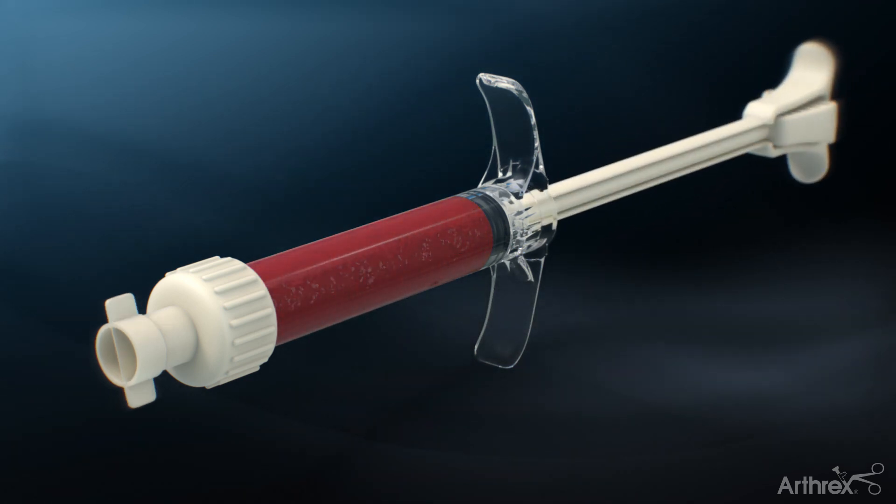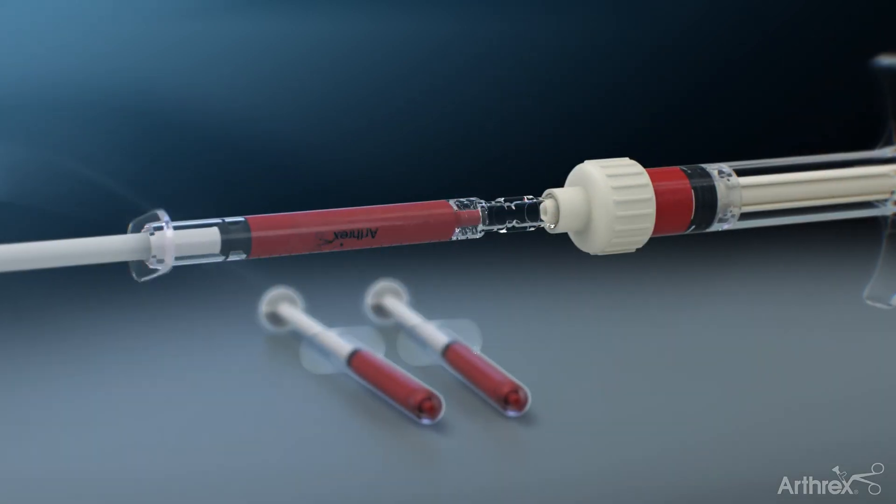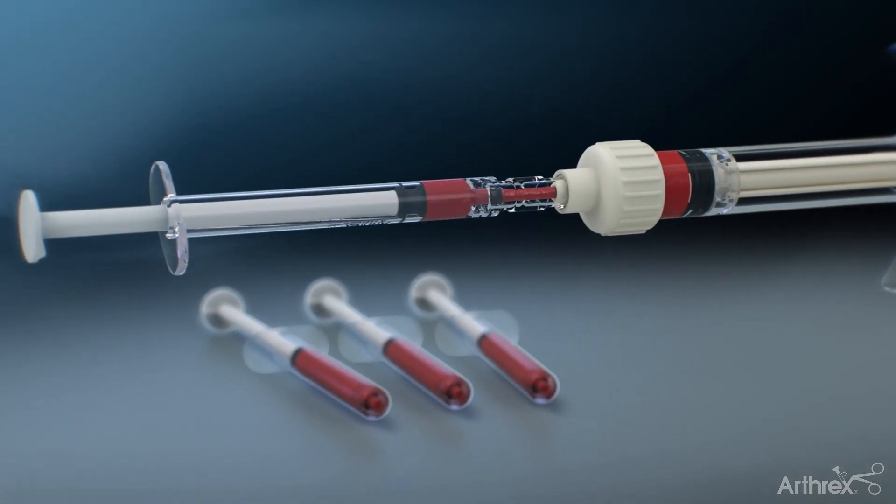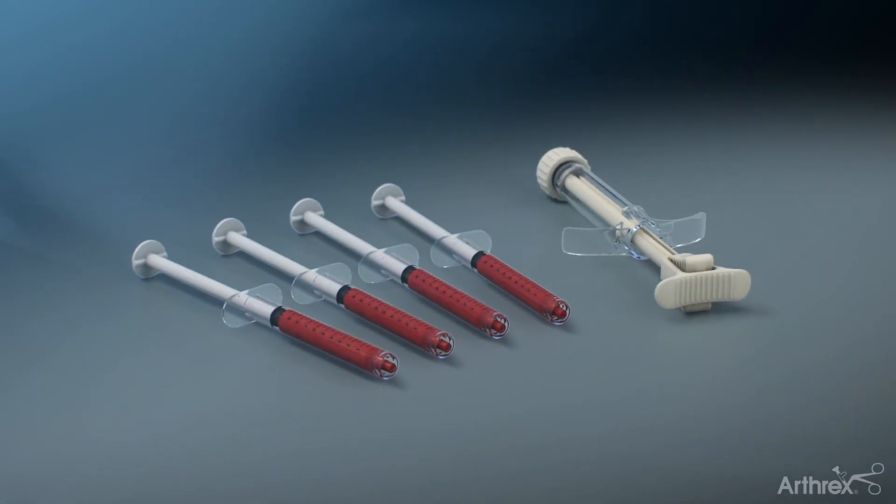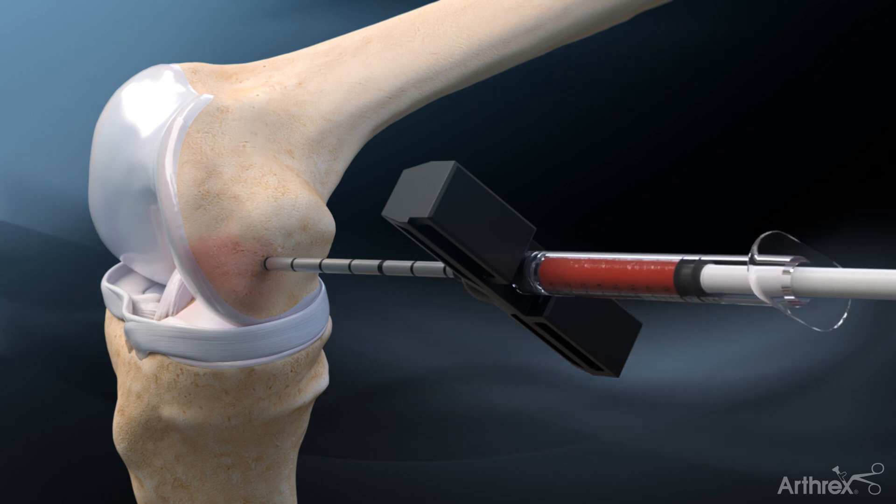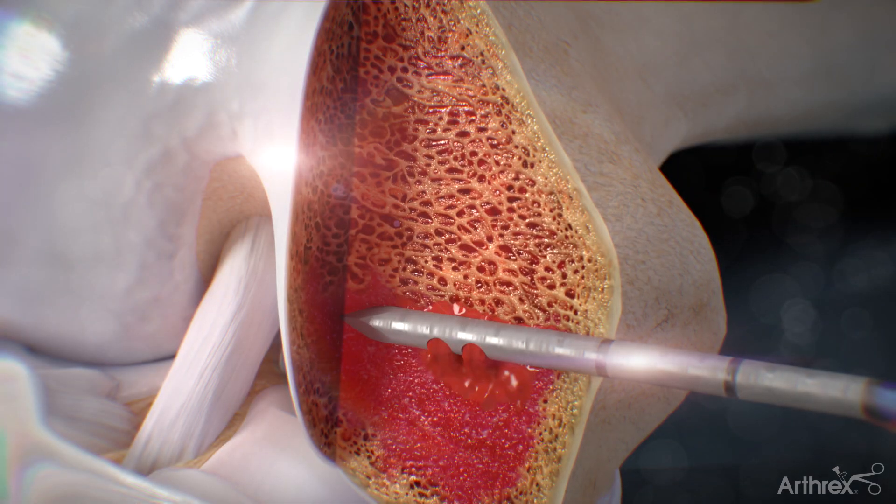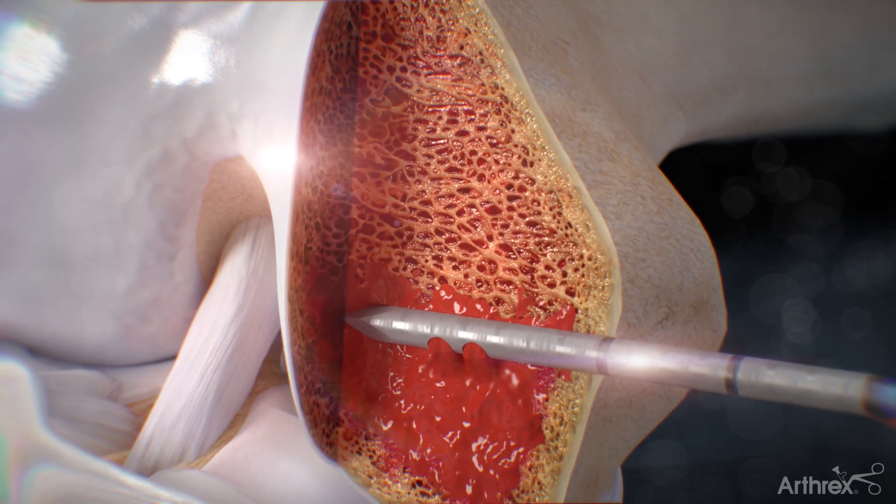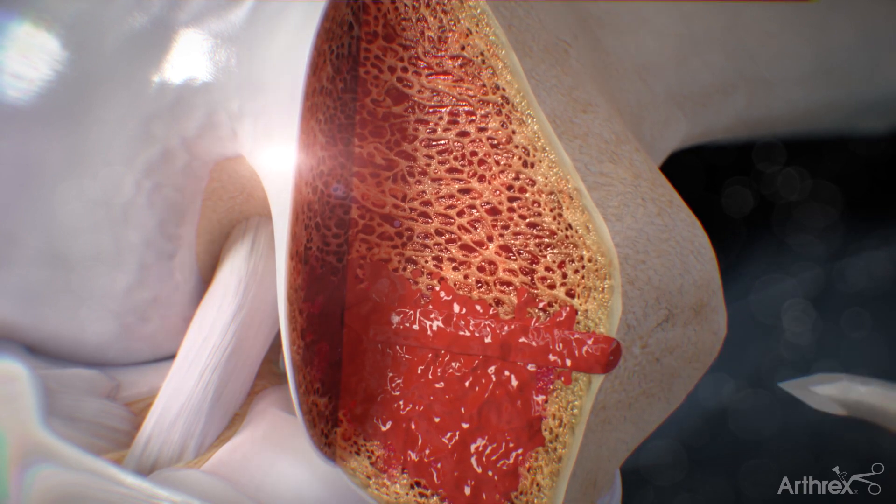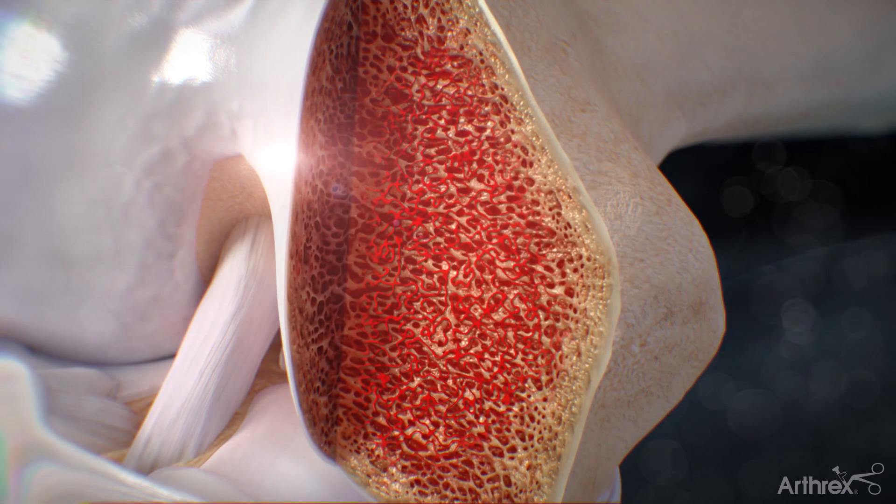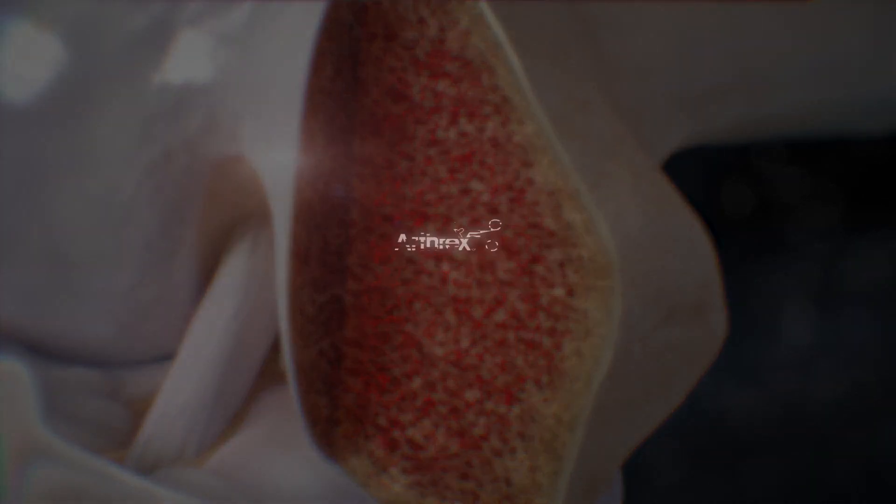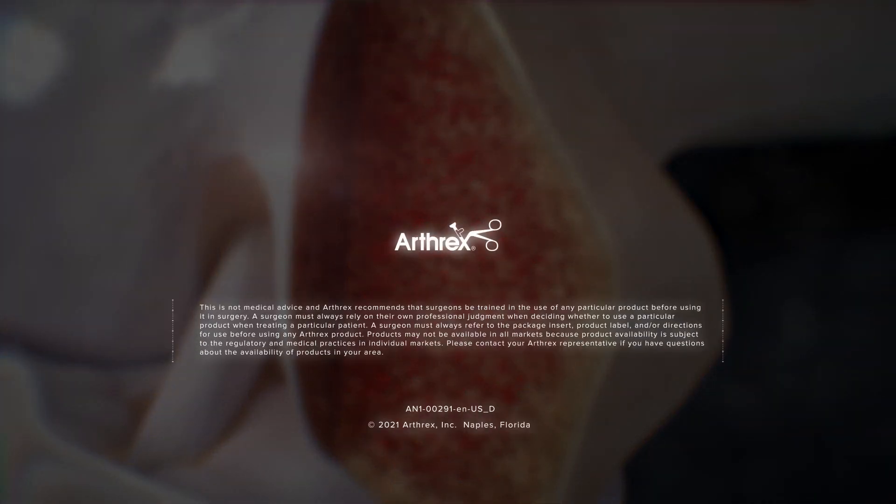Pull back on the mixing element and snap the pushrod back onto the mixing element. The BMA and AlloSync Pure mixture is then transferred to multiple 1cc syringes and then delivered directly into the lesion.